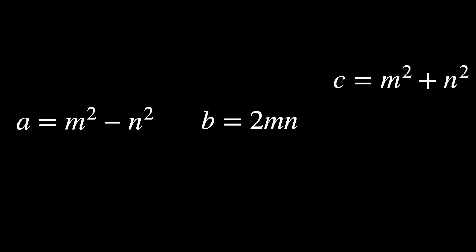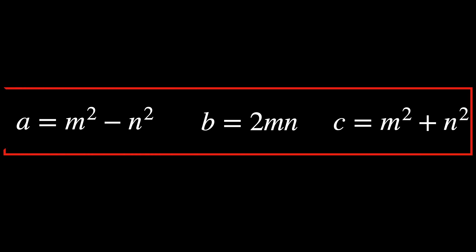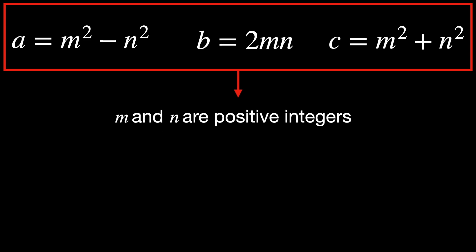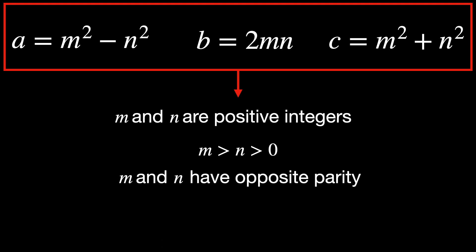We can use formulas which generate all primitive Pythagorean triples — triples where a, b and c are co-prime, meaning they have no common factors other than one. Where m and n are positive integers, m is greater than n, which is greater than zero. They also have opposite parity: one is even and the other is odd. Beyond that, m and n are co-prime.